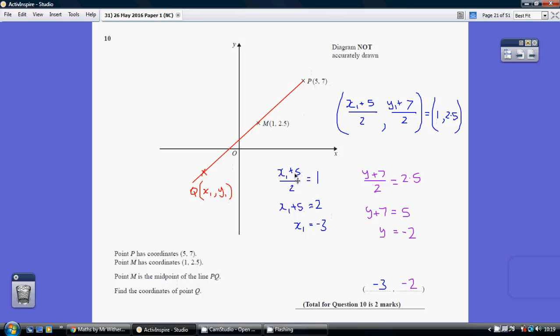So, I'll multiply both sides by 2, and then take away 5 from both sides. I've got my x1 being minus 3. And with my y-coordinate, y1 plus 7 divided by 2 is 2.5. Undoing my dividing by 2 by multiplying both sides by 2, I get y plus 7 equaling 5. Take away 7 from both sides, I get y being minus 2. So, the coordinates of Q is minus 3, minus 2.